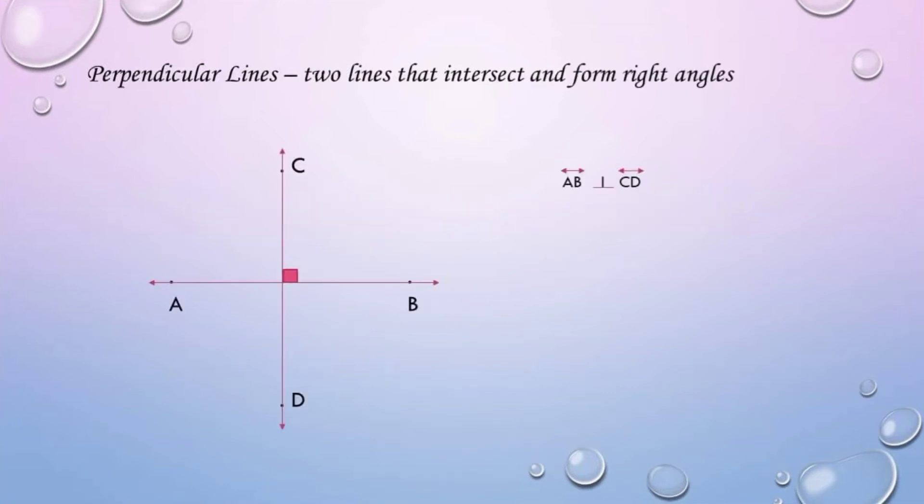Next, we have the perpendicular lines. Two lines that intersect and form right angles are what you call perpendicular lines. Line AB is perpendicular to line CD. The small square that you see is the representation of a right angle. The symbol for a perpendicular line is the inverted capital T.